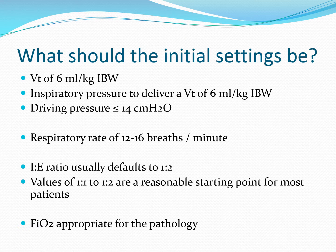So what should those initial settings be? Tidal volume is around 6 mls per kilo of ideal body weight, and in pressure modes, delivering that kind of tidal volume and keeping driving pressures down below 14 centimetres of water. Typically, respiratory rates between 12 and 16 breaths per minute are adequate for the vast majority of patients. The I:E ratio on your ventilator will probably default to 1:2, but values anything between 1:1 and 1:2 are usually reasonable starting points for most patients.